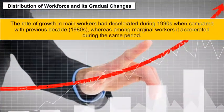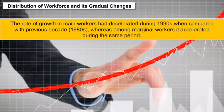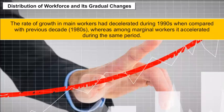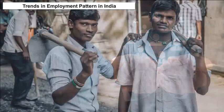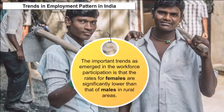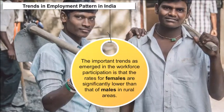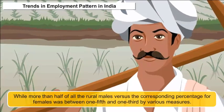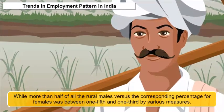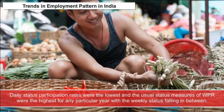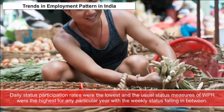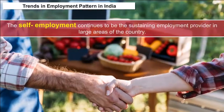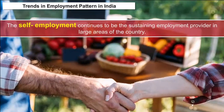The rate of growth in main workers accelerated during the 1990s compared with the previous decade, the 1980s, whereas among marginal workers it also accelerated during the same period. An important trend in workforce participation is that rates for females are significantly lower than for males in rural areas — more than half of rural males participated, while the corresponding figure for females was between one-fifth and one-third by various measures. Self-employment continues to be the sustaining employment provider across large areas of the country.